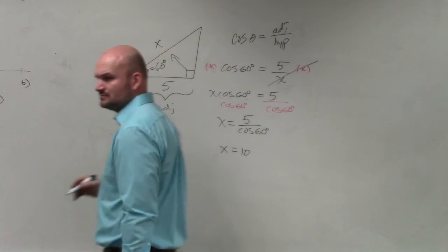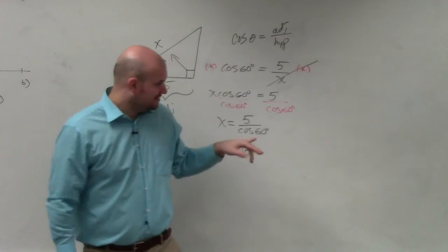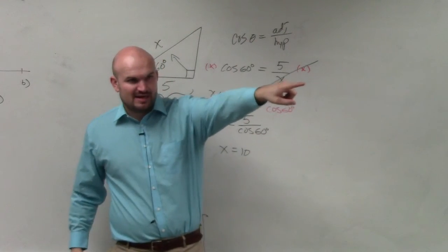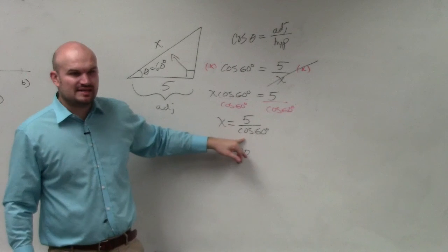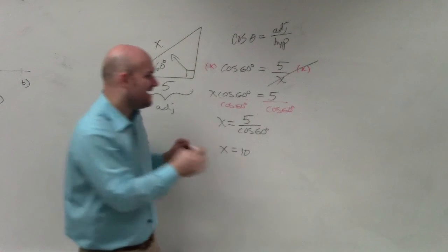That was pretty easy. Well, let's think about this conceptually. We just practiced evaluating angles. What is cosine of 60? Think of the unit circle. What's cosine of 60? It's 1 half.